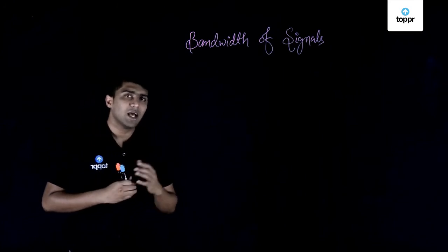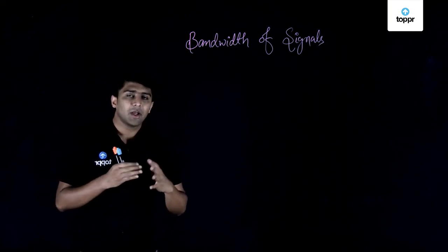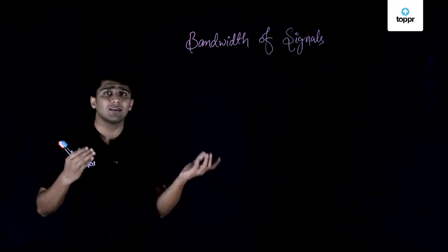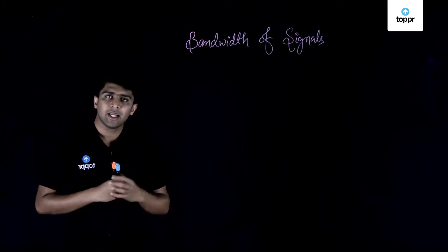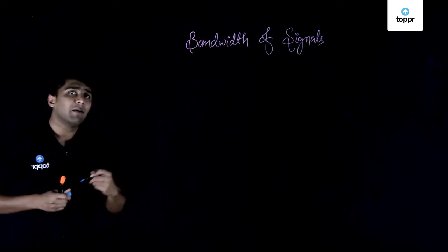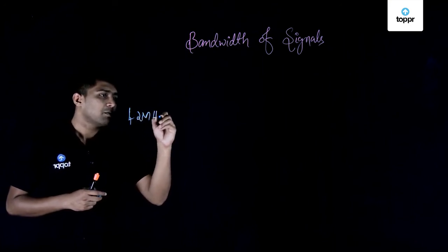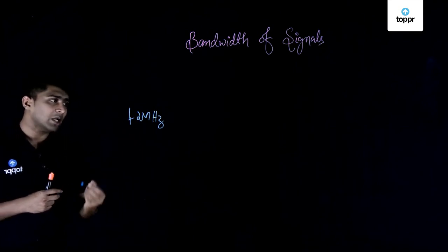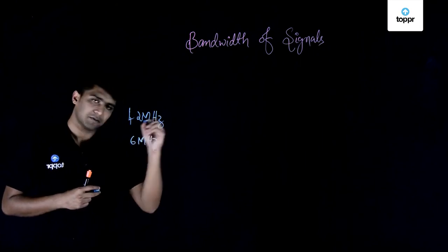Now you can imagine why the bandwidth of a signal is very important. Because the thing which we are watching on TV — a movie, a match, anything — is a combination of both sound and video. The bandwidth of a video signal is normally 4.2 megahertz. But since the video signal is a combination of both sound and picture, the bandwidth is normally allocated as 6 megahertz.